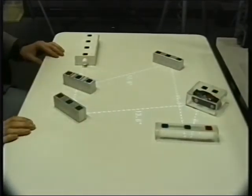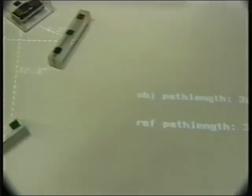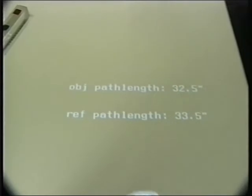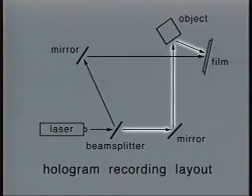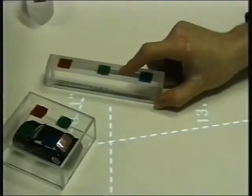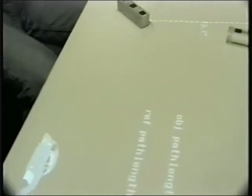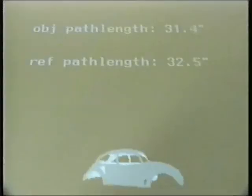Once the setup is complete and both a reference path and an object path have been constructed, Illuminating Light indicates the total length of each. Remember that a requirement of a holographic layout is that these two lengths must be equal. Moreover, once light from the properly illuminated object has reached the film, the system presents a rendered simulation of what a real hologram recorded with the mocked-up layout would look like.